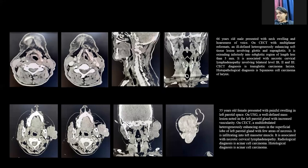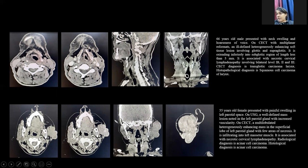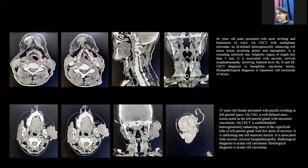I will now discuss the cases found in my study. The first row shows non-contrast images, followed by contrast images in axial, sagittal, and coronal reformats. In the first case, a 66-year-old male presented with neck swelling and hoarseness of voice. On CECT multiplanar reformats, we found an ill-defined heterogeneously enhancing soft tissue lesion involving the glottis and supraglottic region with mild extension into the subglottic region, associated with cervical lymphadenopathy. The diagnosis on CECT was transglottic carcinoma of the larynx, confirmed as squamous cell carcinoma on histopathology.